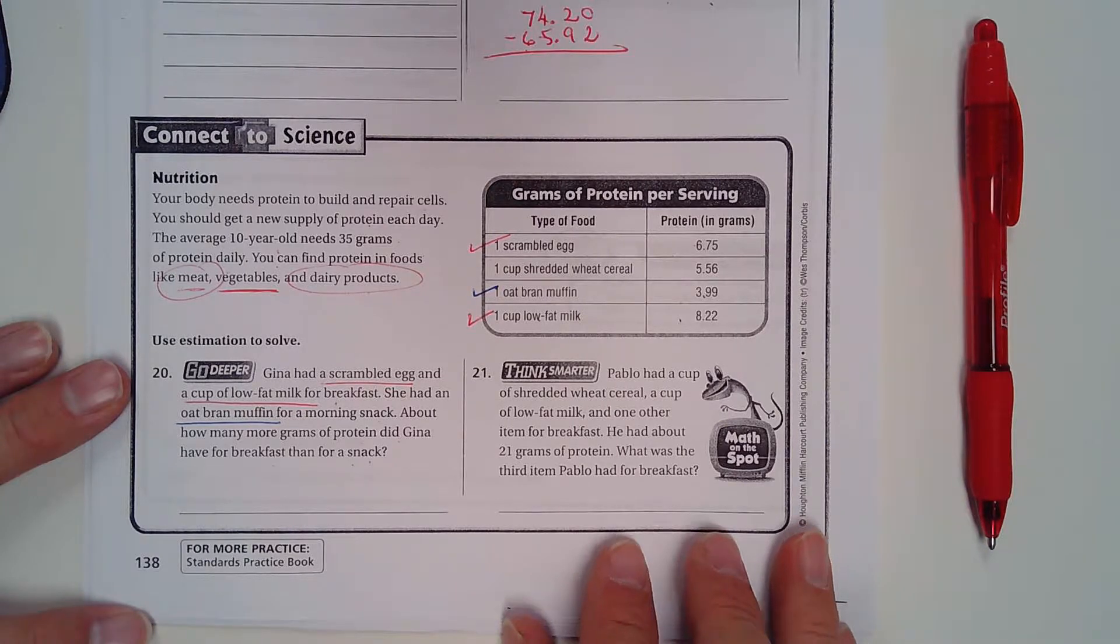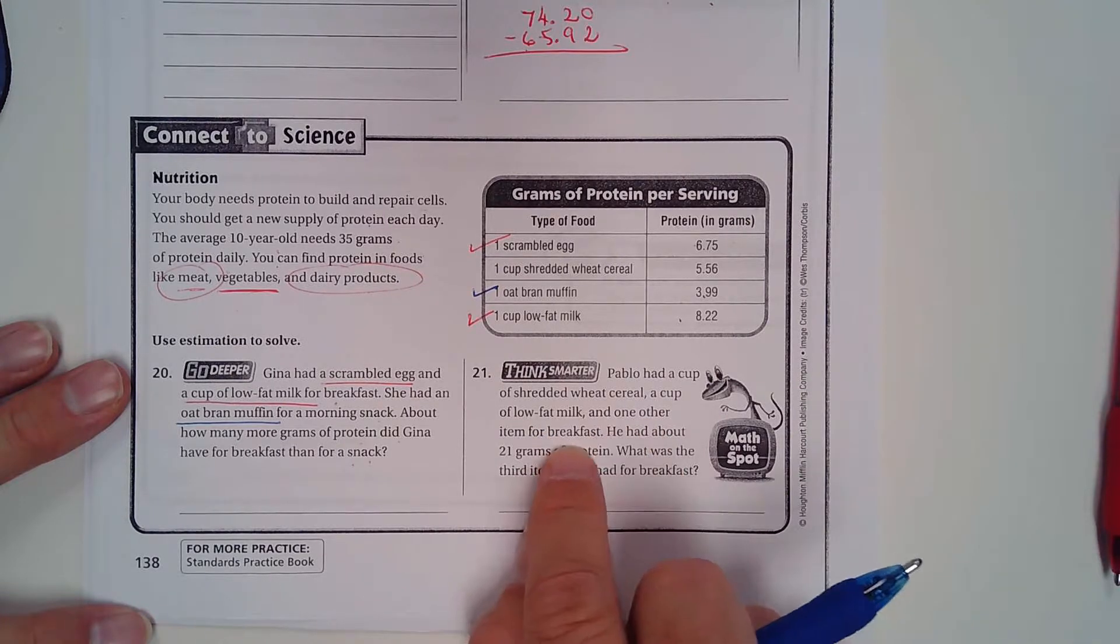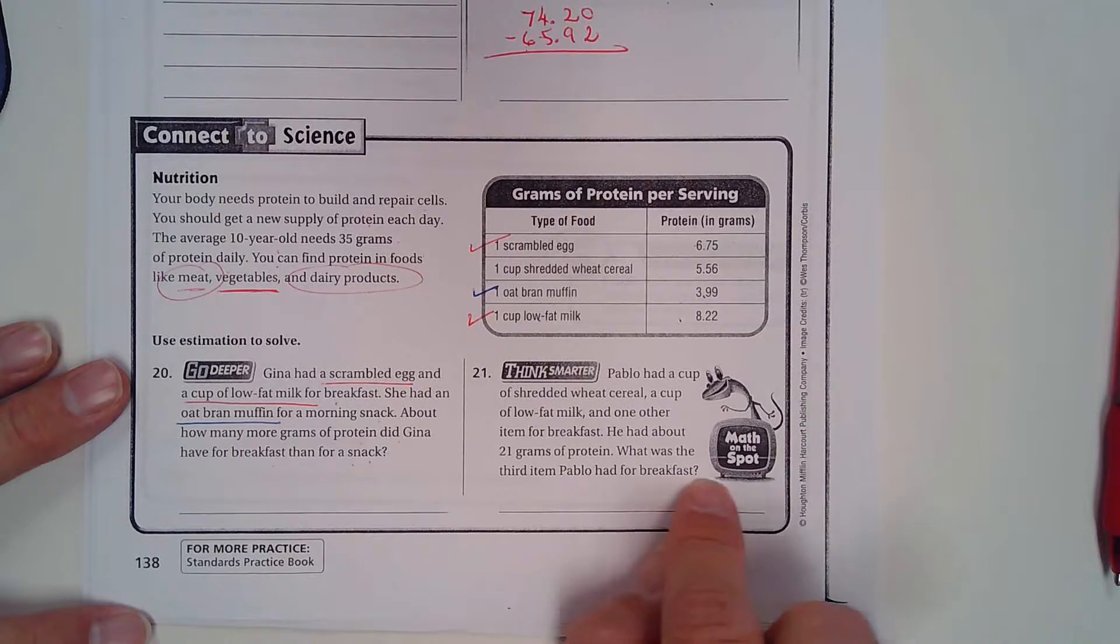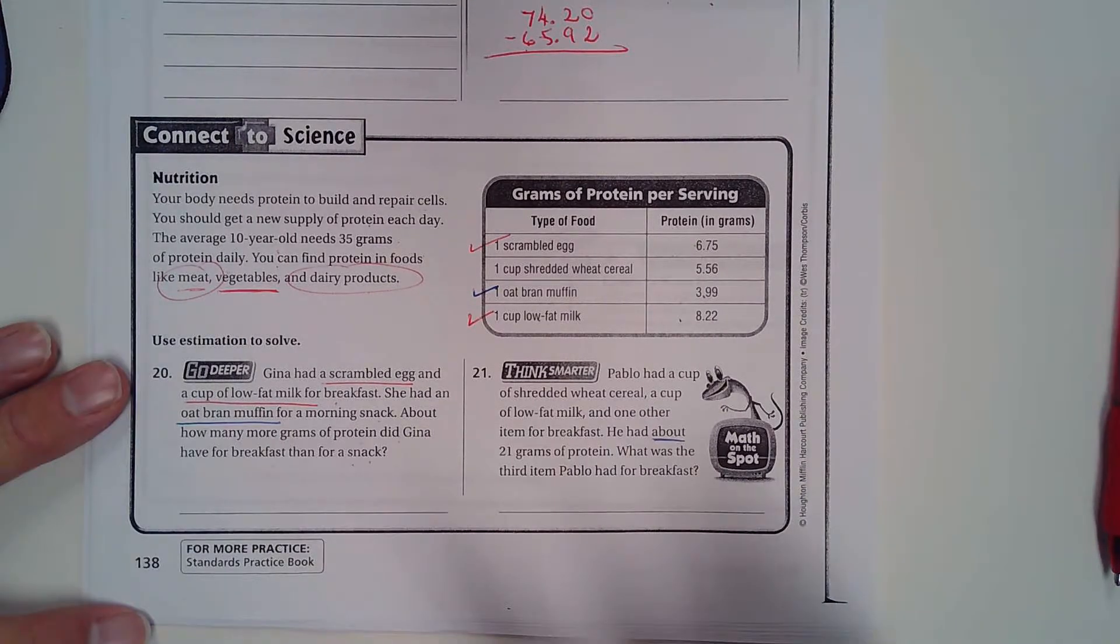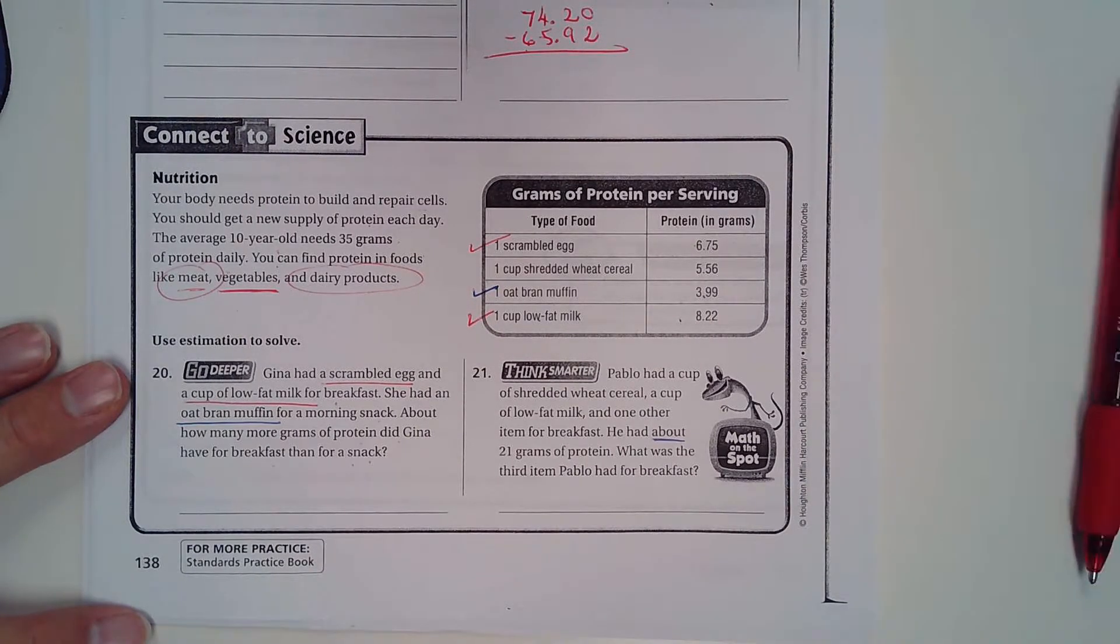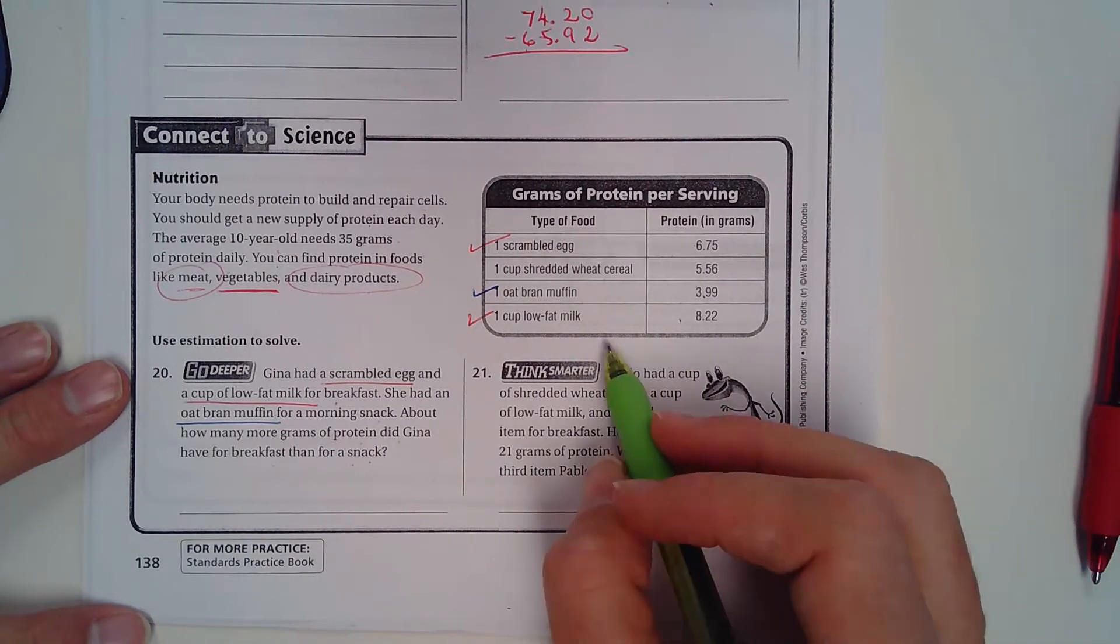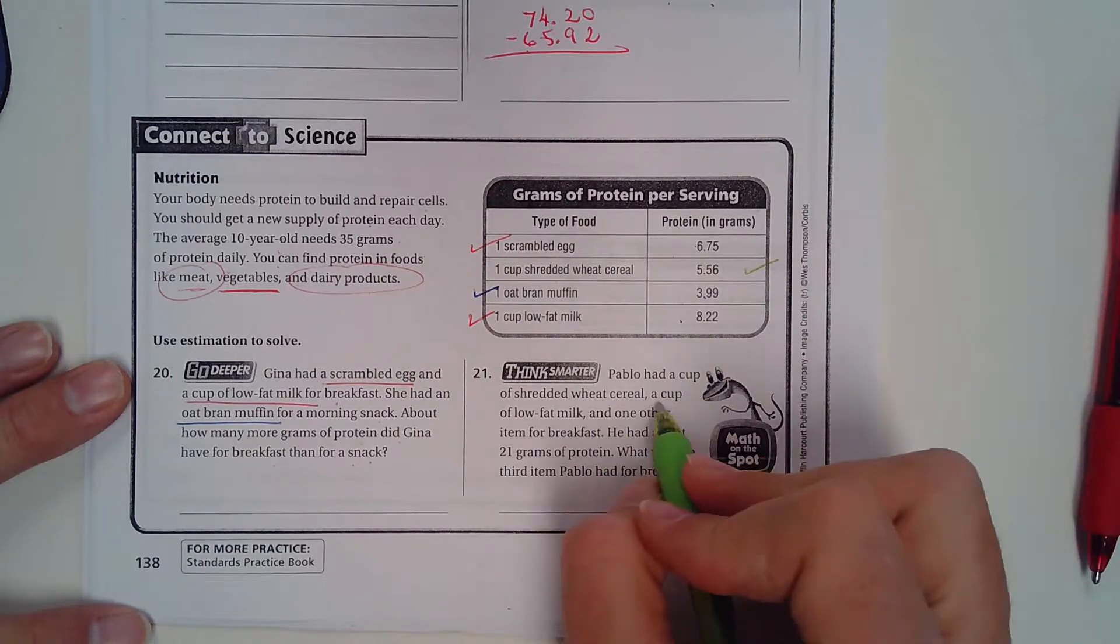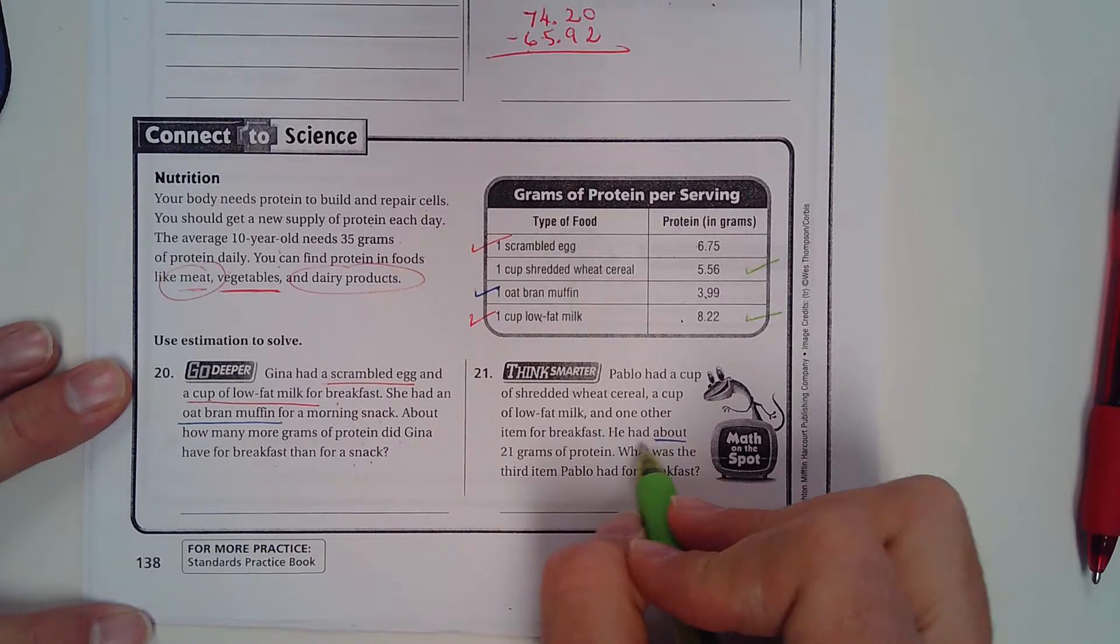Pablo had a cup of shredded wheat cereal, a cup of low-fat milk, and one other item for breakfast. He had about 21 grams of protein. What was the third item Pablo had for breakfast? And they said about, not exactly. So let's use a different color pen here. So Pablo had a cup of shredded wheat, okay, so I'm just going to put a check there. A cup of low-fat milk, I'll put a check there. And one other item, and he had about 21 grams.